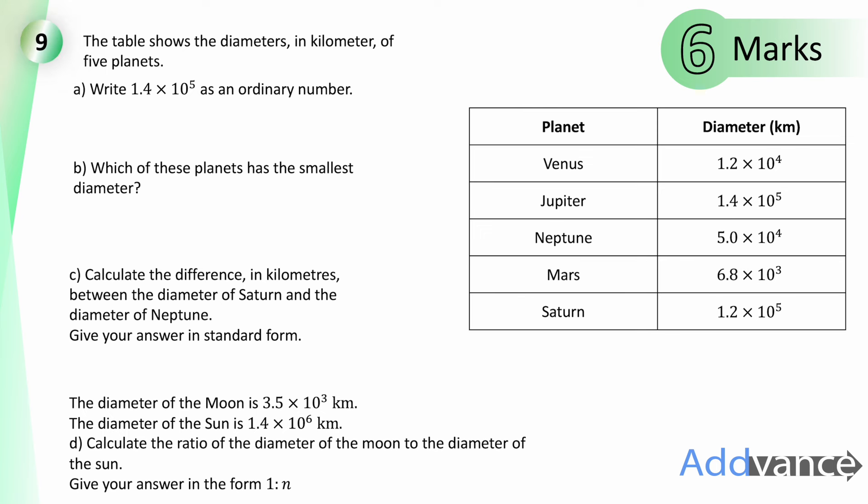Question nine. The table shows diameters in kilometres of five planets. Part A: write 1.4 × 10⁵ as an ordinary number. Move the decimal point five places right: 140,000. Part B: the planet with the smallest diameter has the smallest power of 10. Mars has 10³, so Mars has the smallest diameter.